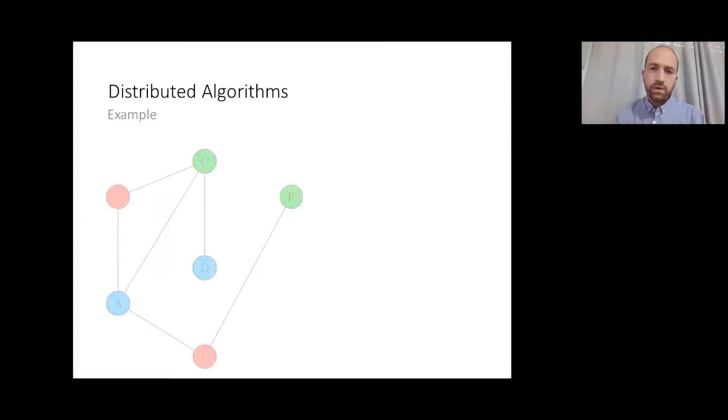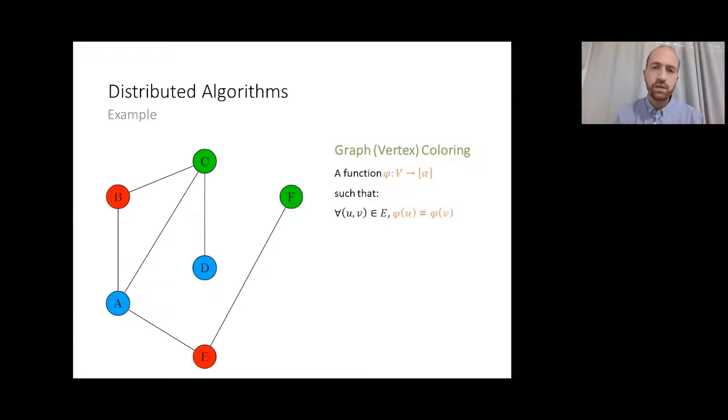The local model focuses on solving graph problems over the communication graph. For example, the graph coloring problem has many implications on resource allocation and scheduling problems. While finding the minimum amount of colors needed to color a graph is hard, which must be affected by the form of the entire graph, finding a legal delta plus 1 coloring can be solved locally for each vertex affected only by its neighbors.